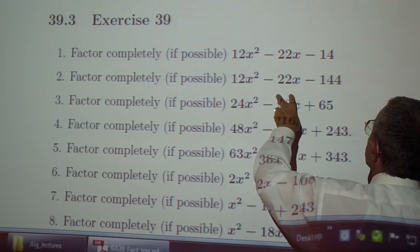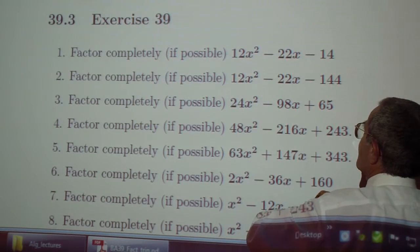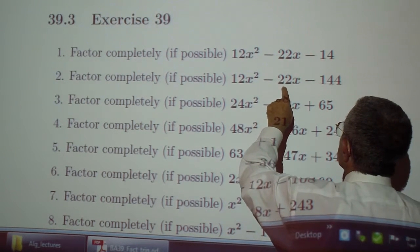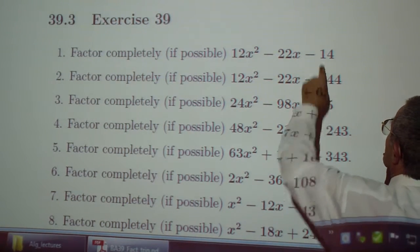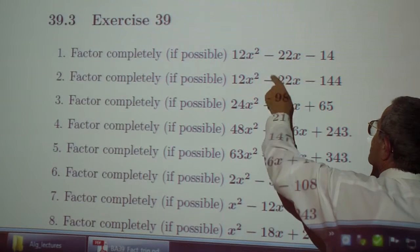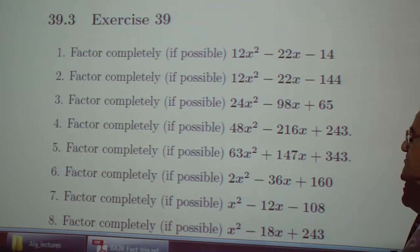12x squared minus 22x minus 144. I wonder if that's a misprint, but I don't know. It has to be because these two are not the same. That's probably something else. We'll see.